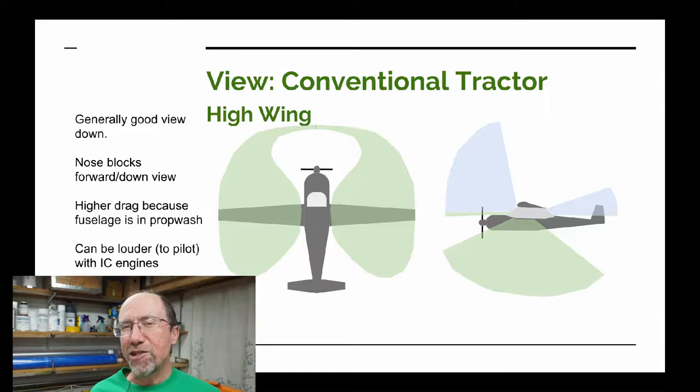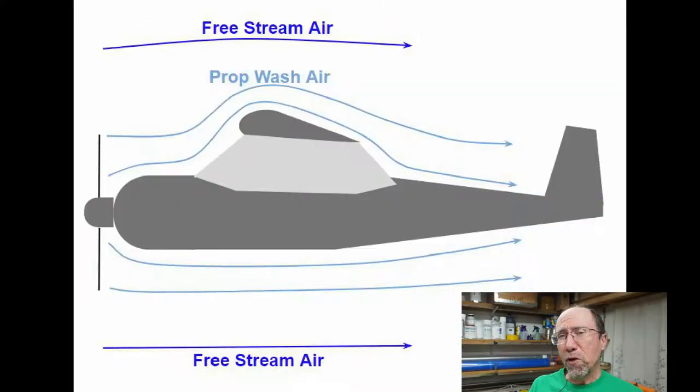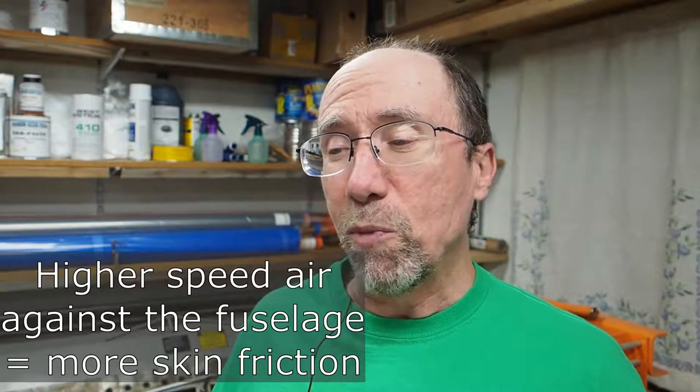The configuration most commonly used in light aircraft is the conventional tractor configuration — shown here as high wing. This is a generally good view, not the best but not bad. The main problem for our recreational flying view is that the nose blocks a lot of the forward and down view. Since it's a tractor configuration, you've got prop wash flowing over the fuselage — air going faster than the free stream — which means the tractor configuration has a little more drag than a pusher. Since we're using battery power and want as little drag as practical, we probably won't go with this configuration.